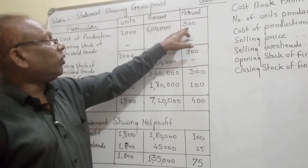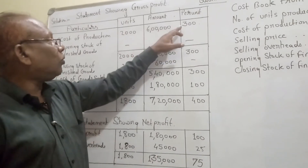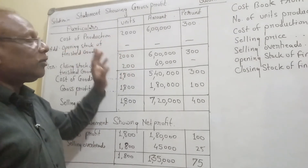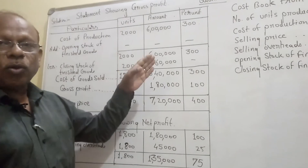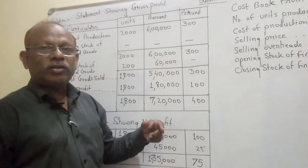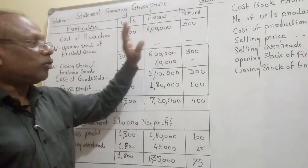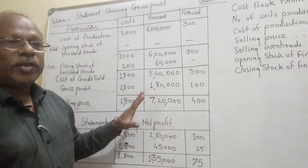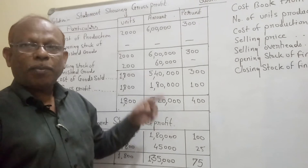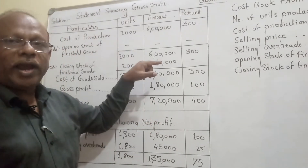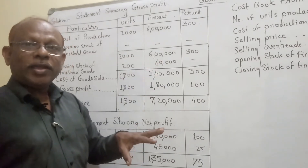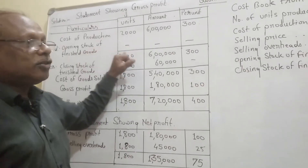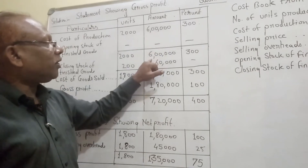As per the format, we add opening stock of finished goods to the cost of production. However, opening stock is nil, so we do not write any amount or units for it. Remember: opening stock of finished goods is added, and closing stock of finished goods is subtracted. Since opening stock is nil, adding it to the cost of production of 6,00,000 gives the same amount of 6,00,000.